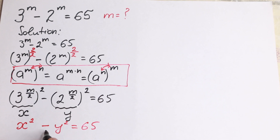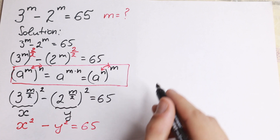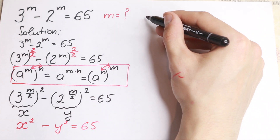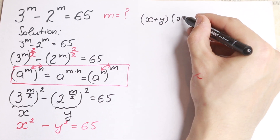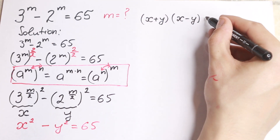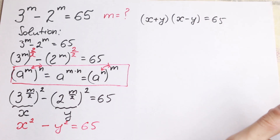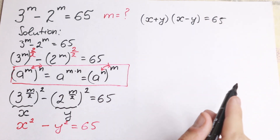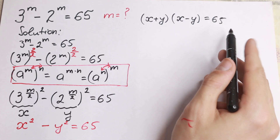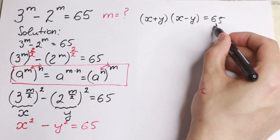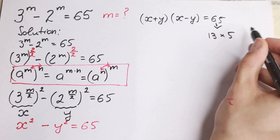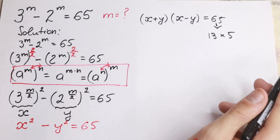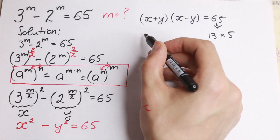Using the difference of squares formula, x squared minus y squared equals x plus y times x minus y. So we have x plus y times x minus y equal to 65. Now we need to factor 65, and the only way to express it as a product of two positive integers is 13 times 5.